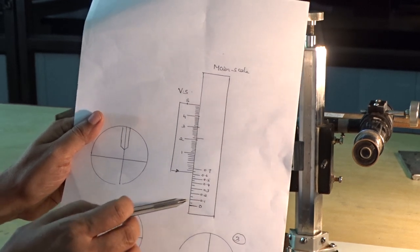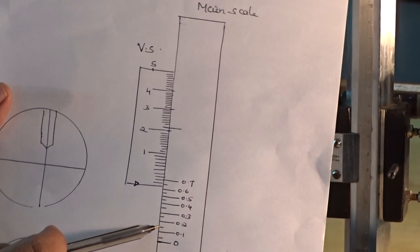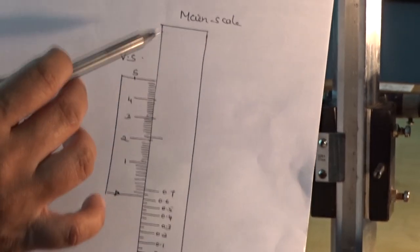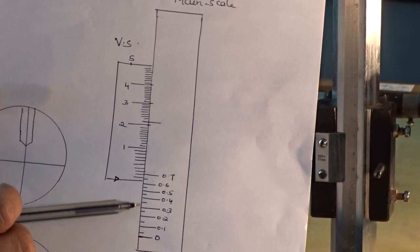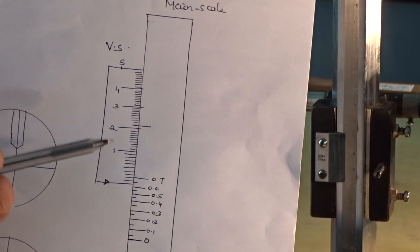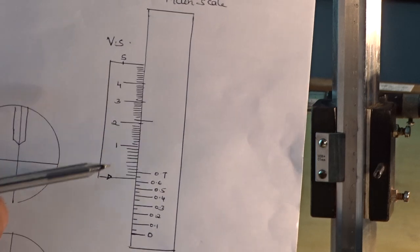Next, small line is 0.05. Next to that 0.1, 0.15, 0.2, 0.25 like that. So, difference between any two readings on main scale is 0.05. Similarly, vernier scale, there are 50 divisions on vernier scale starting from 0.